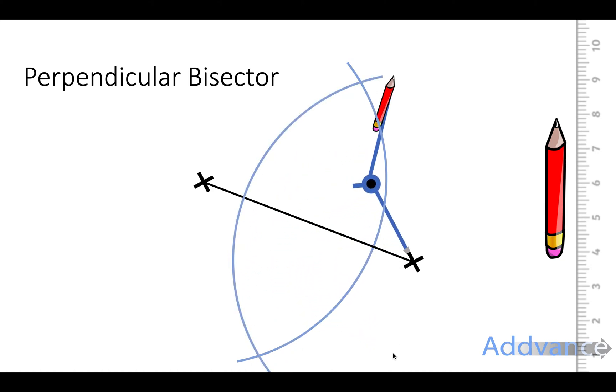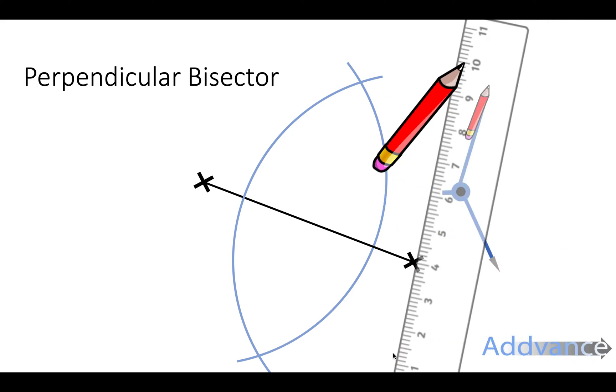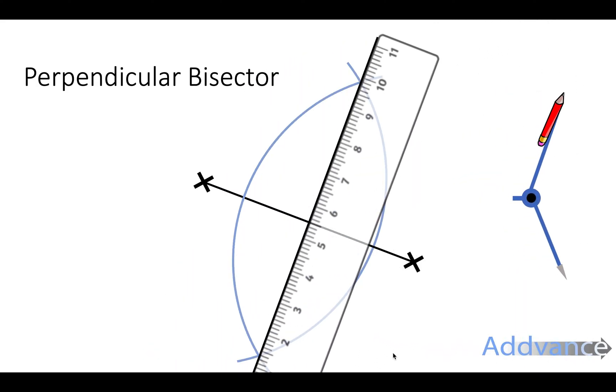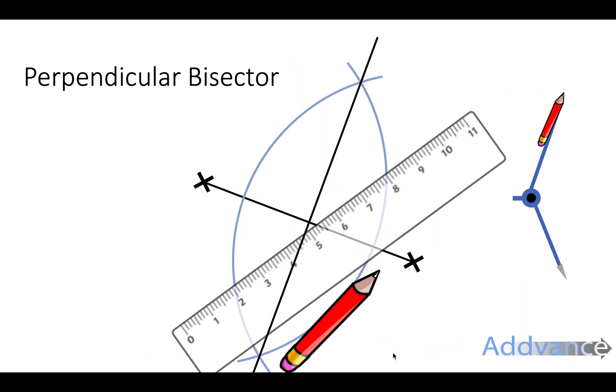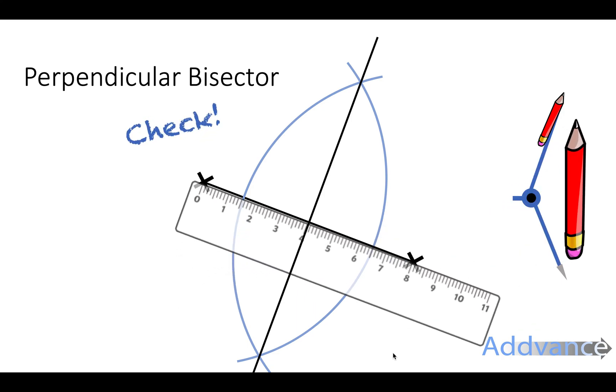So these are two perfectly equal arcs from each dot. They cross over at these two points here and we're going to connect those two points with our pencil and ruler like this. This new line we've just drawn is a perfect halfway line between those two and we're just going to check by measuring the distance which is eight centimeters, and so this new distance should be four centimeters, which it is. So we've done it correctly.